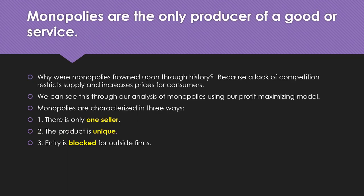What allows for a firm to be a monopoly? We've been discussing the level of competition in terms of how many other firms are producing that good or service, whether the product is differentiated or not, and whether it's easy to enter the industry. When you have a monopoly, you only have one firm — there's only one person selling the product, which results in the product being unique.